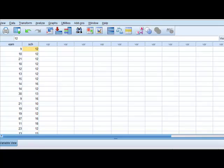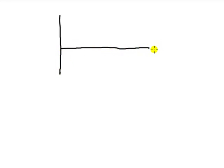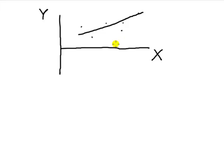Let's recap on what this residual plot is. Say I've got a scatter plot of my IV — that's called X — and my DV. In this case the DV is earnings and X is years of schooling. I might have some data points, loads of them. The idea of fitting the model is to find the line of best fit. The residual plot is simply a plot of the residuals. So what are the residuals? In layman's terms, the residual is the mistake that your line makes in predicting the value of Y.